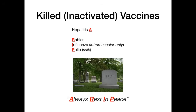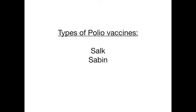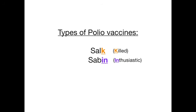Something incredibly high yield that shows up all the time is the distinction between the two polio vaccines — Salk and Sabin. You need to know which is live attenuated and which is killed. Easy way to remember: the K in Salk stands for the K in killed. And the '-in' at the end of Sabin sounds enthusiastic or lively — someone who's really enthusiastic is lively — so Sabin is live attenuated. K in Salk for killed; Sabin for lively. Test writers love this distinction.